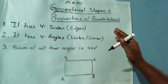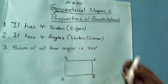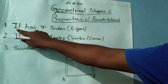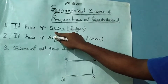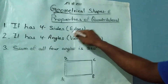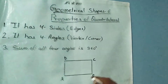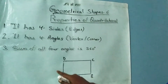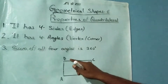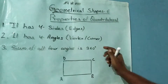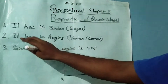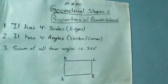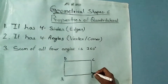Let's talk about its properties. The first property is it has four sides — four edges: AB, BC, CD, and DA. Every quadrilateral must have four sides.